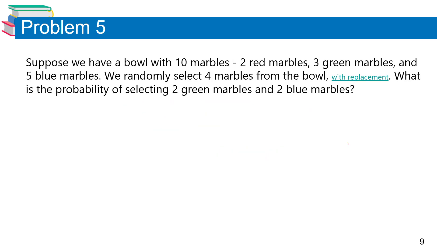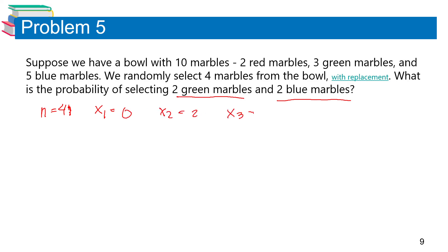The last problem: Suppose we have a bowl with 10 marbles — 2 red marbles, 3 green marbles, and 5 blue marbles. We randomly select 4 marbles from the bowl with replacement. What is the probability of selecting 2 green marbles and 2 blue marbles? Here n equals 4, x₁ equals 0 (red), x₂ equals 2 (green), and x₃ equals 2 (blue).